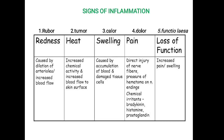Next is Dolor, which means pain. Pain is caused by direct injury of the nerve fibers, pressure of hematoma on the nerve endings, and chemical irritants such as bradykinin, histamine, and prostaglandins. These are the main chemical mediators responsible for producing pain in inflammation.